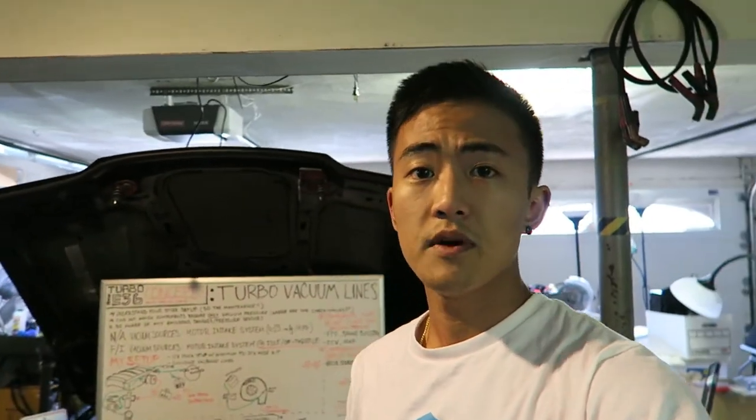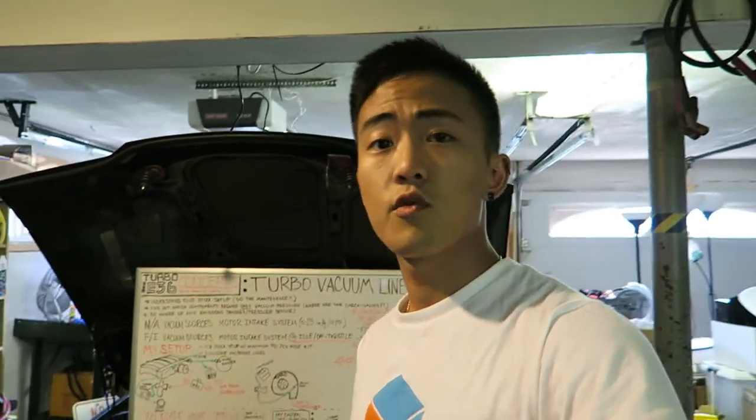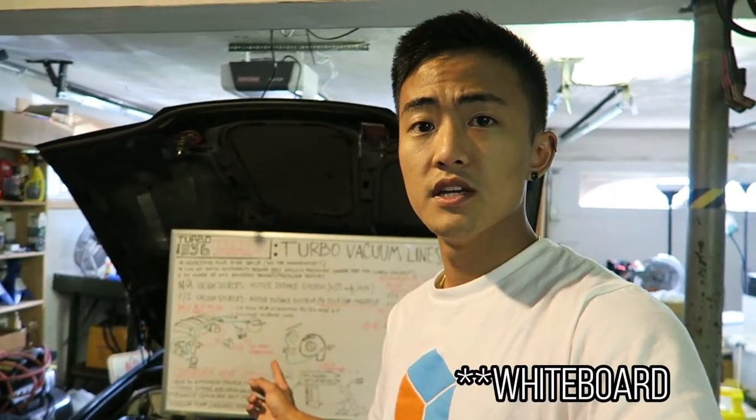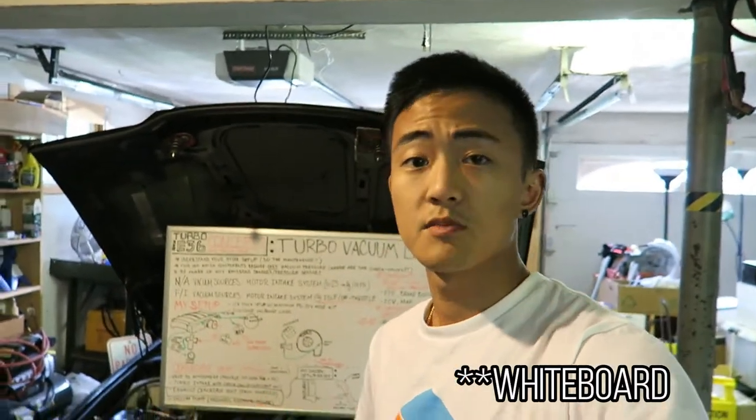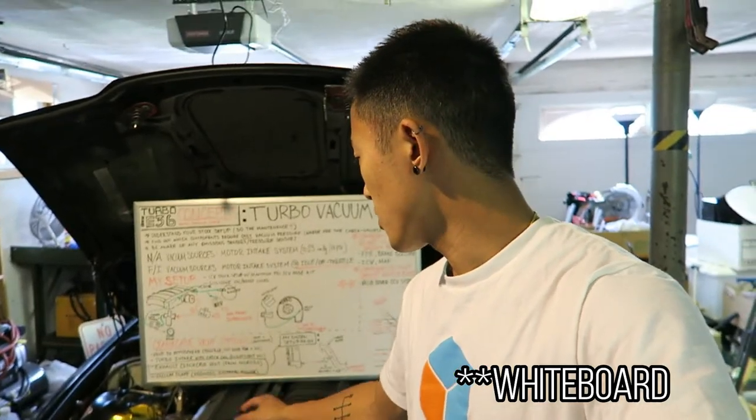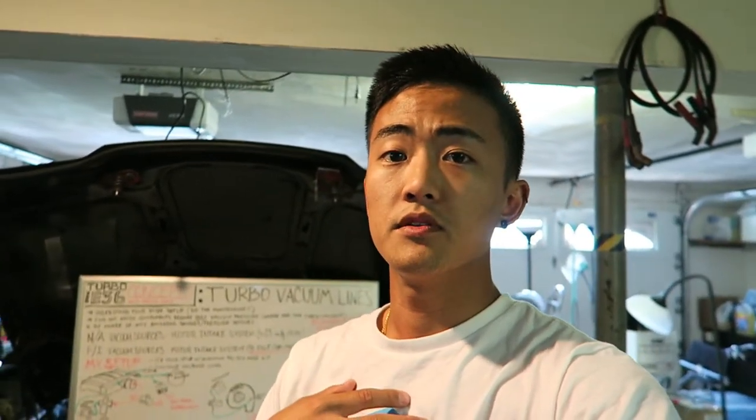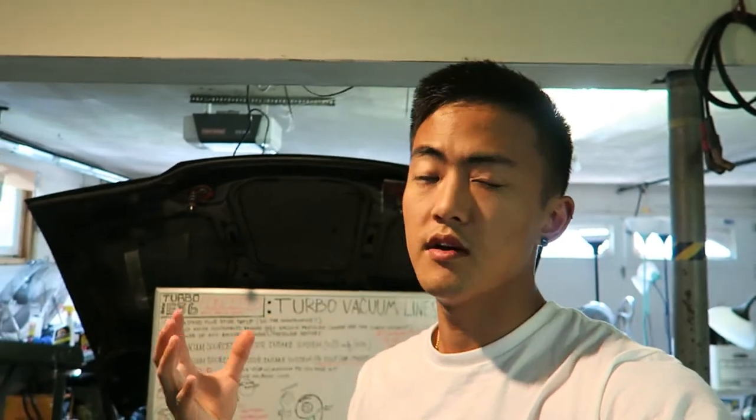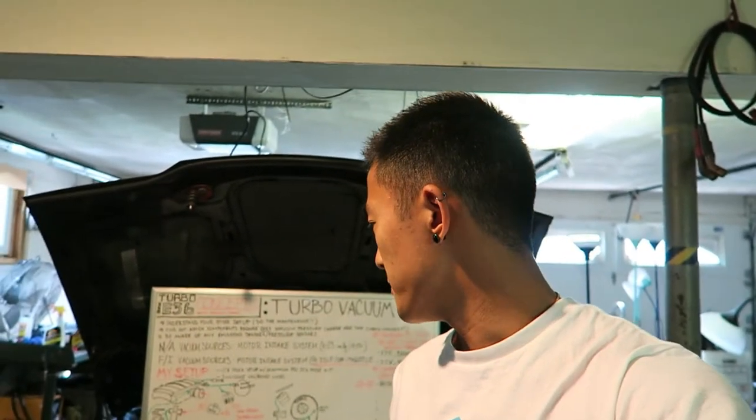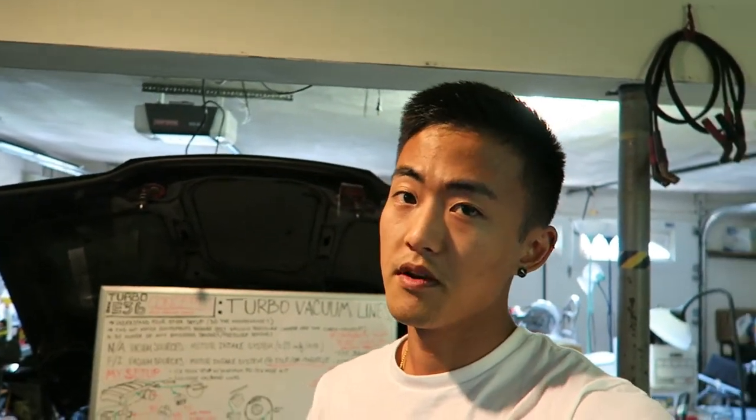In order to explain how all my vacuum and boost lines are routed, I chose to do it in two ways depending on the way you like to learn. One way is I wrote it all on a highlighted board, and second I will actually be explaining physically where in the motor all these vacuum lines are. I hope that this video will help inspire future turbo E36 builds because I know at this point in my build it was the hardest part, wrapping my head around where all these lines went.